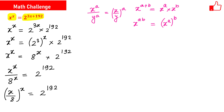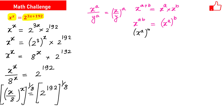Now let us raise both sides to the power of 1 over 8. Using the rule that x raised to the power a, raised to the power b, equals x raised to the power a times b, the left side becomes x over 8 raised to the power x times 1 over 8, and the right side becomes 2 raised to the power 192 times 1 over 8.